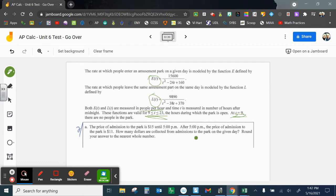The price for admission to the park is $15. After 5 p.m., the price of admission to the park is $11. How many dollars are collected? Okay. Well, we have two things. So from when it opens, 9 a.m. till 5, which will be 17 hours after midnight, we're going to have people entering the park. And this will give us the total people that enter the park. But then I need to multiply that by 15.